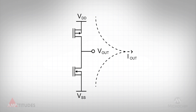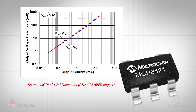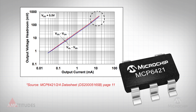As the output current increases, the IR drop across the internal output transistor goes up, limiting the output voltage swing. This characteristic is shown here for the MCP6421 operational amplifier. At low output current levels, the output voltage is within a millivolt of the supply rails. However, if required to source 10 milliamps of current, the output voltage range is restricted to approximately 300 millivolts within the two supply rails.